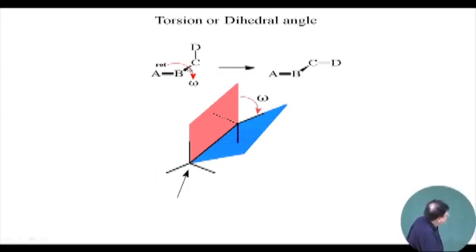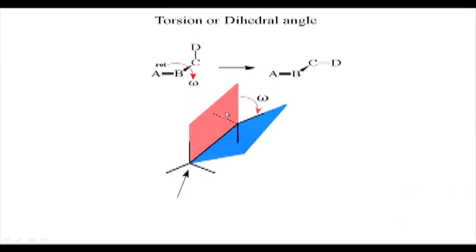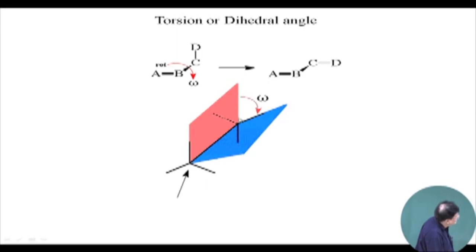This is what we are talking about. Here we are talking about the angle — this is one bond and then another bond. Basically three atoms — one, two, three — make one plane, shown by the blue surface. And this bond and the same carbon-carbon bond, with those three atoms, also form a plane, shown by the pink surface. So there are two planes — one blue, one red — and the angle between these two planes is what is called the dihedral angle or the torsional angle. As you rotate the carbon, this dihedral angle is going to change.